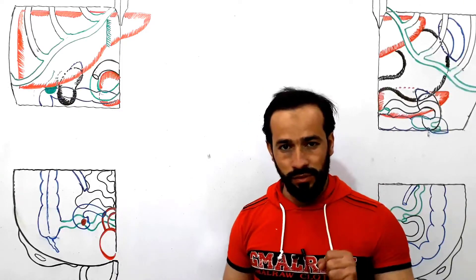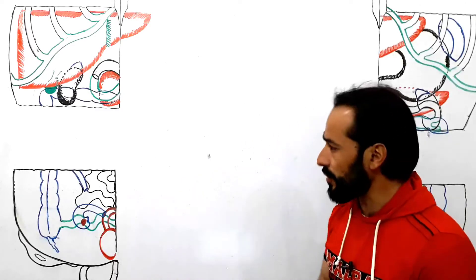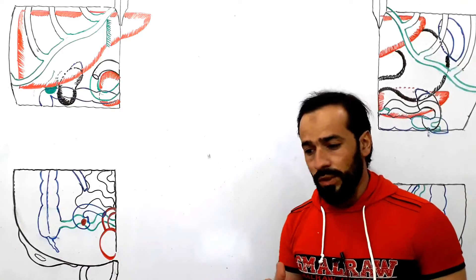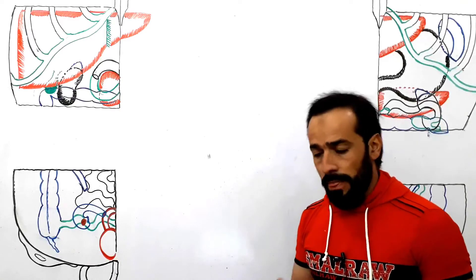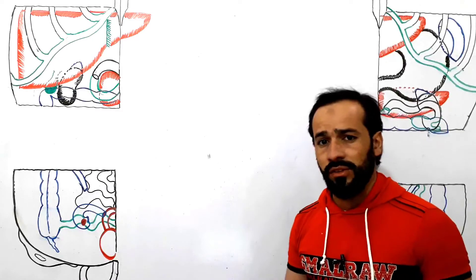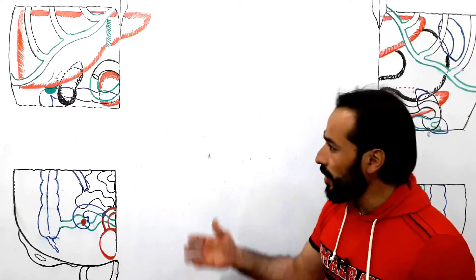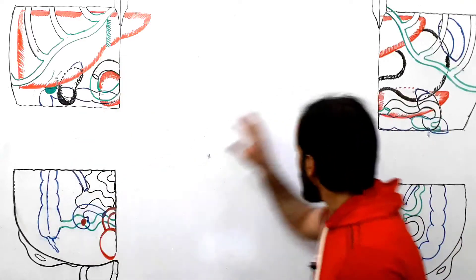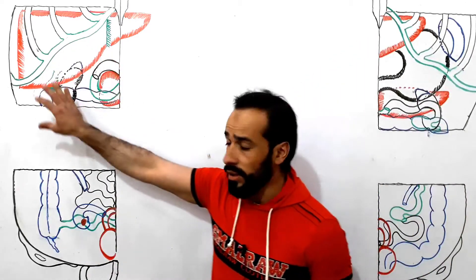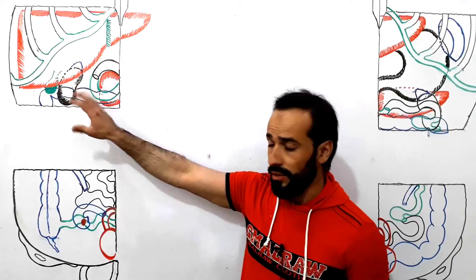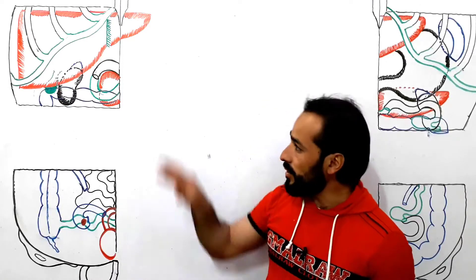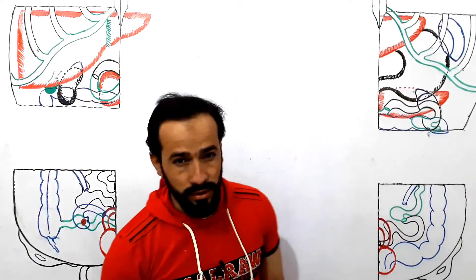Now in this lecture I am going to discuss the abdominal quadrants — what are abdominal quadrants, how are they created, and what are the structures and organs found in the abdominal quadrants. I have drawn each quadrant separately so that we can discuss the organs present in each quadrant of our abdomen.